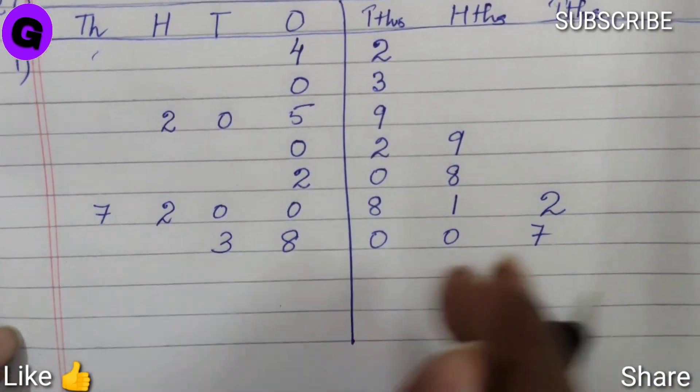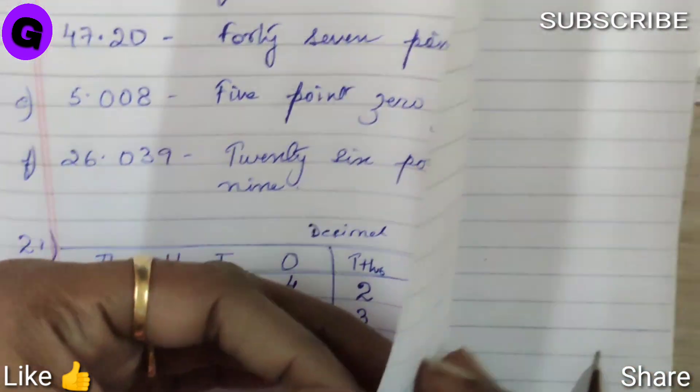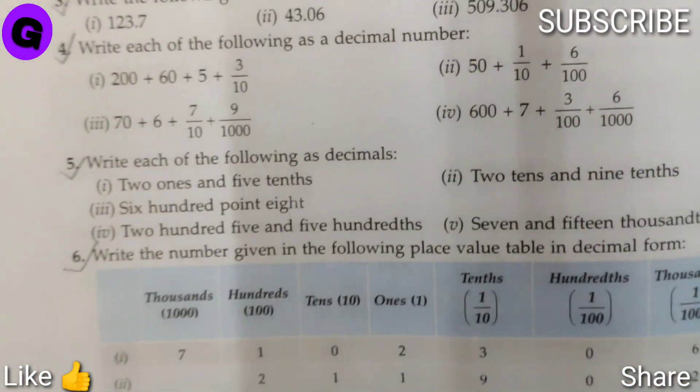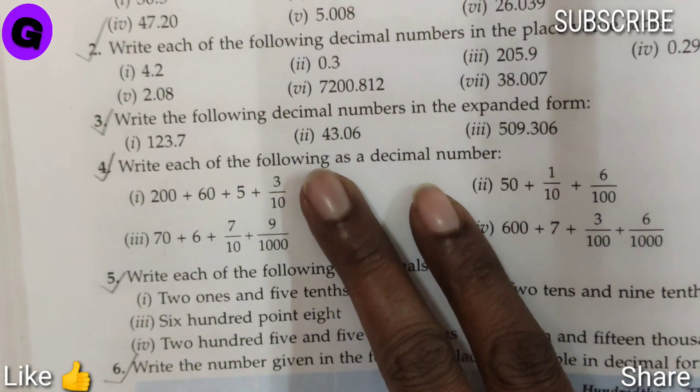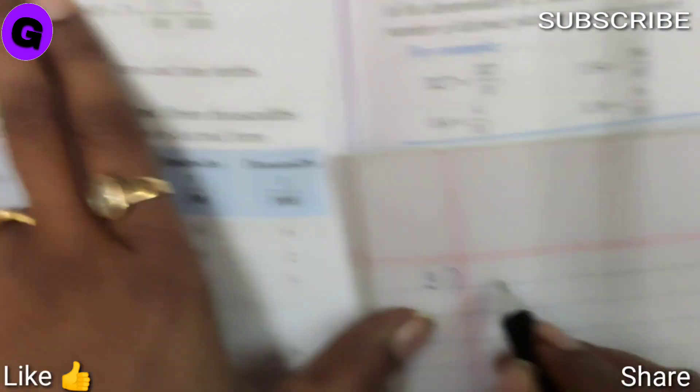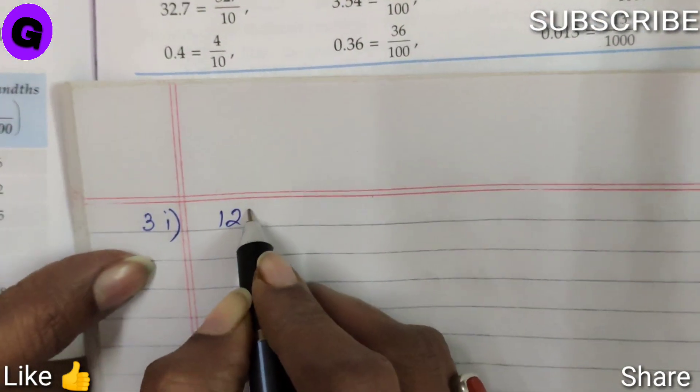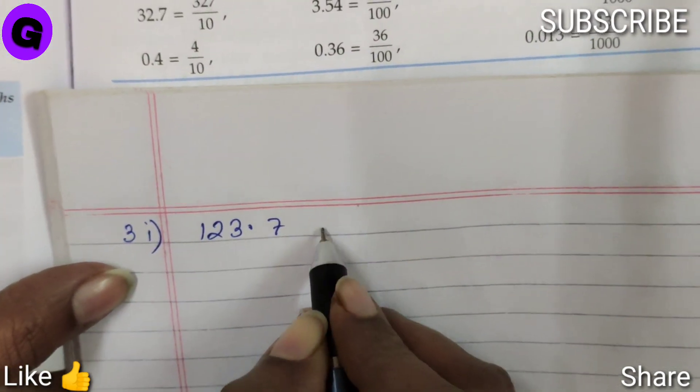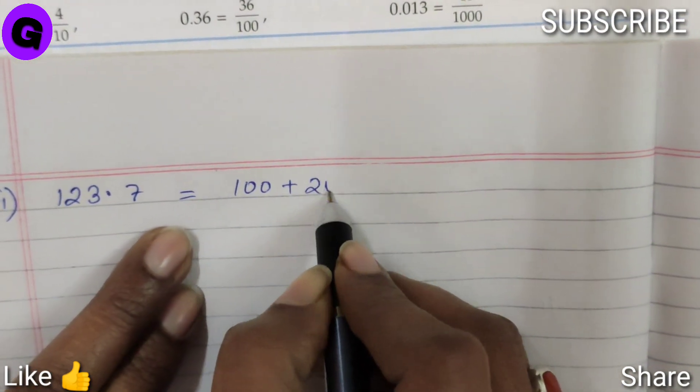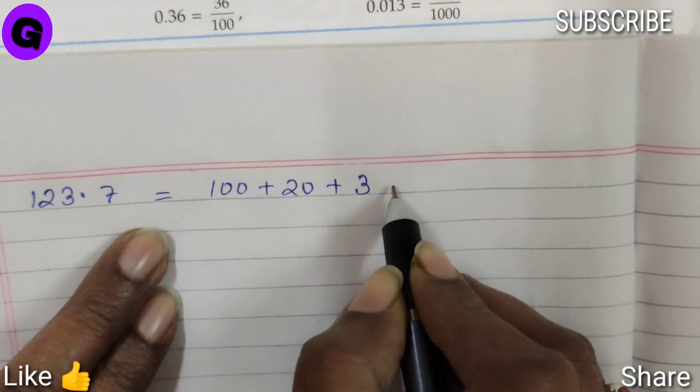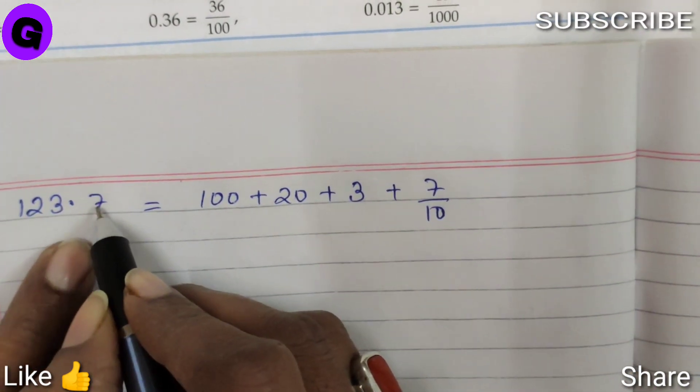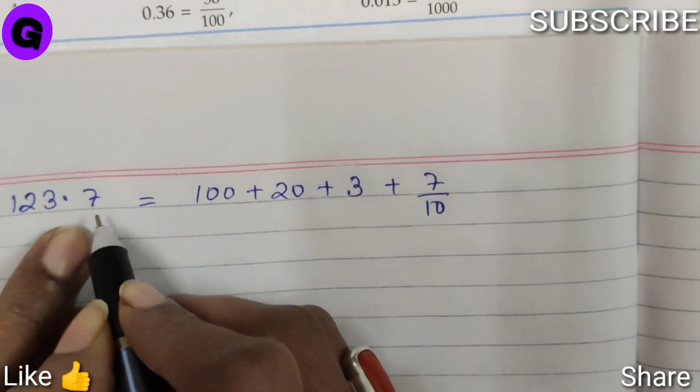Next we will turn the page and come to question number 3. Question number 3 says that we have to expand the decimal number. The first is 123.7. Now this we have to write as 100 plus 20 plus 3 plus 7 by 10, because here 7 is under tenths place.